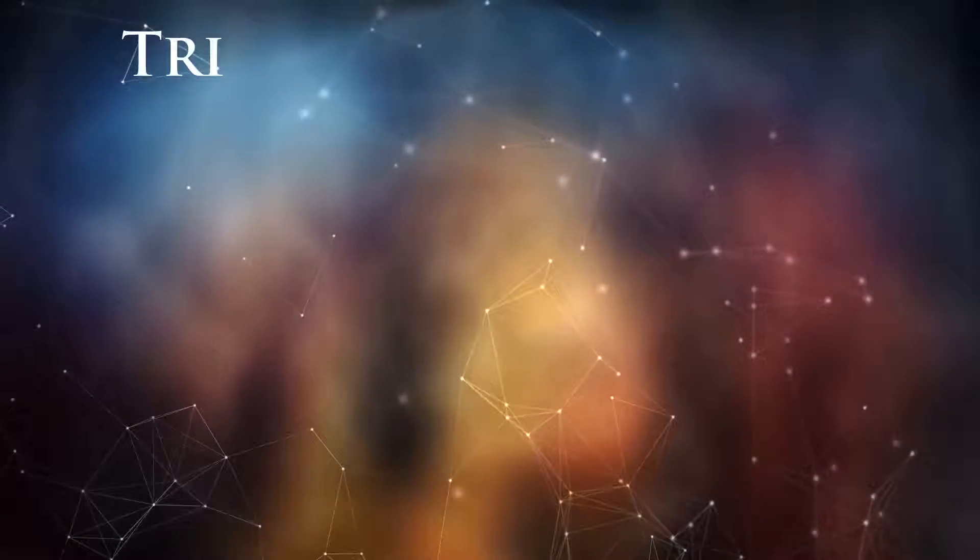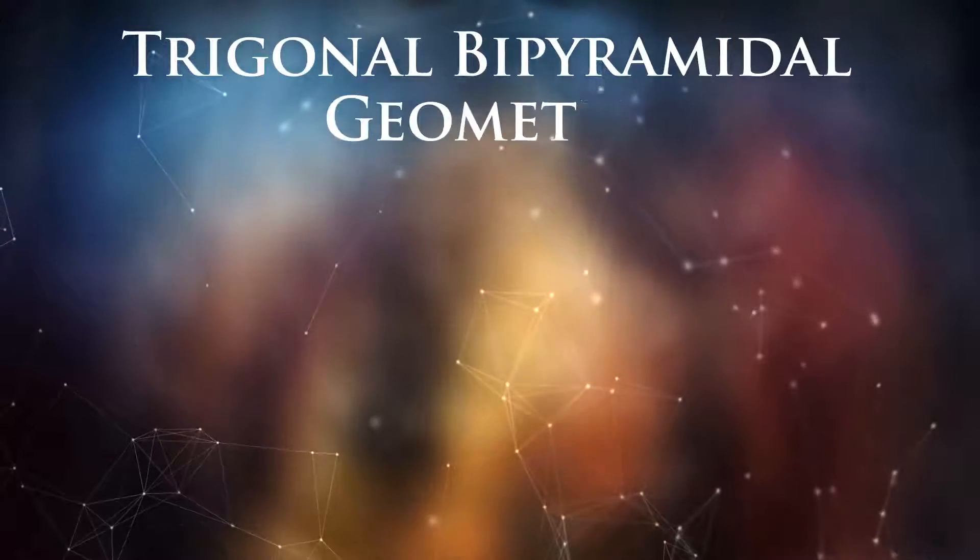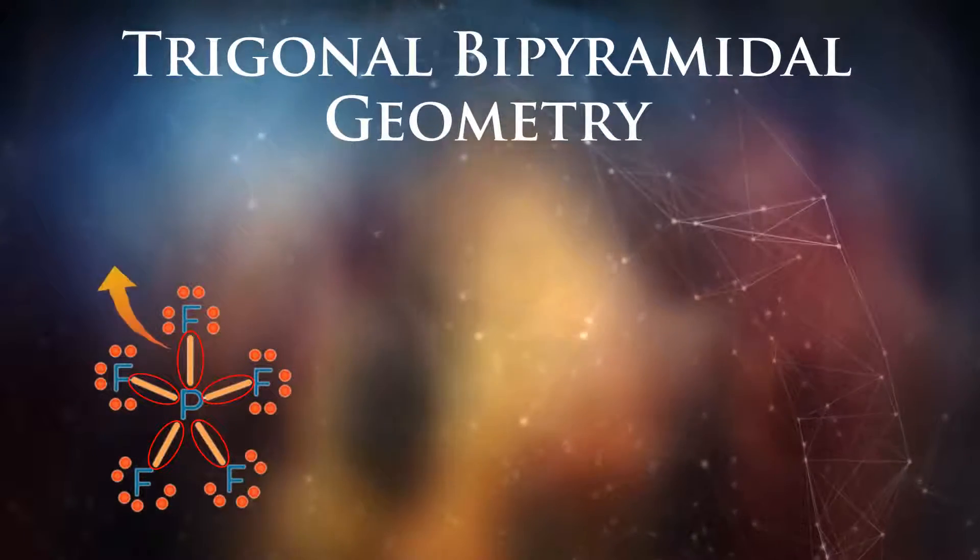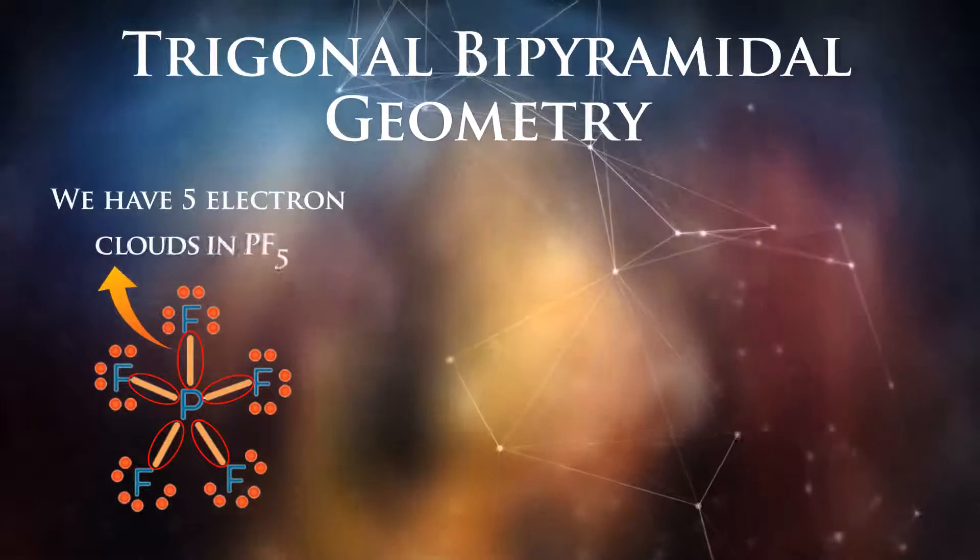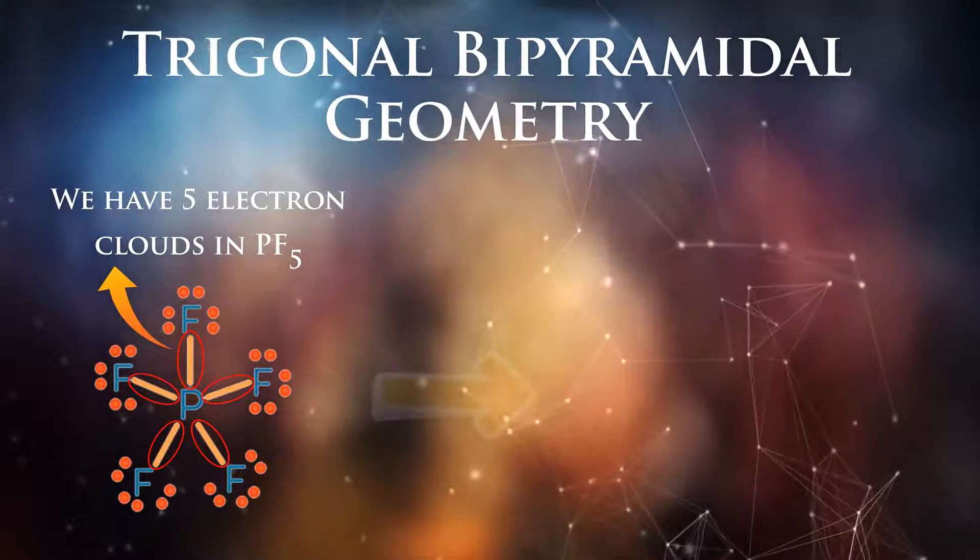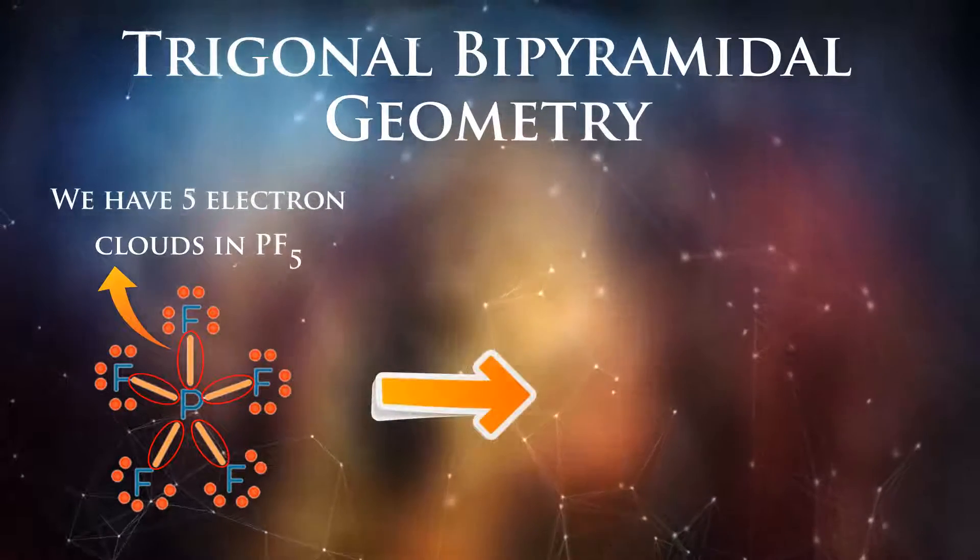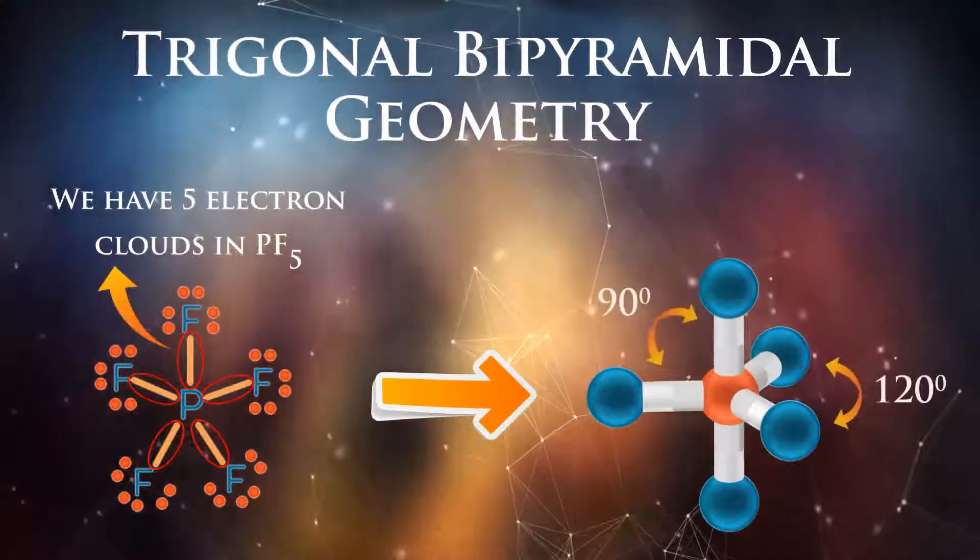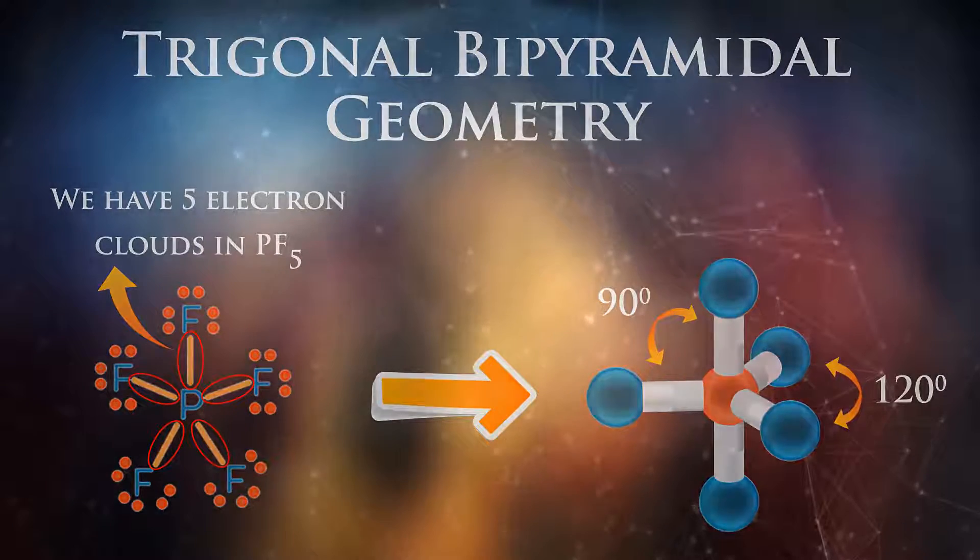The fourth geometry is trigonal bipyramidal. The molecule will take this geometry if it has five electron clouds around its central atom. The resultant 3D structure will be a combination between two geometries which are perpendicular to each other. These two geometries are trigonal planar and linear.